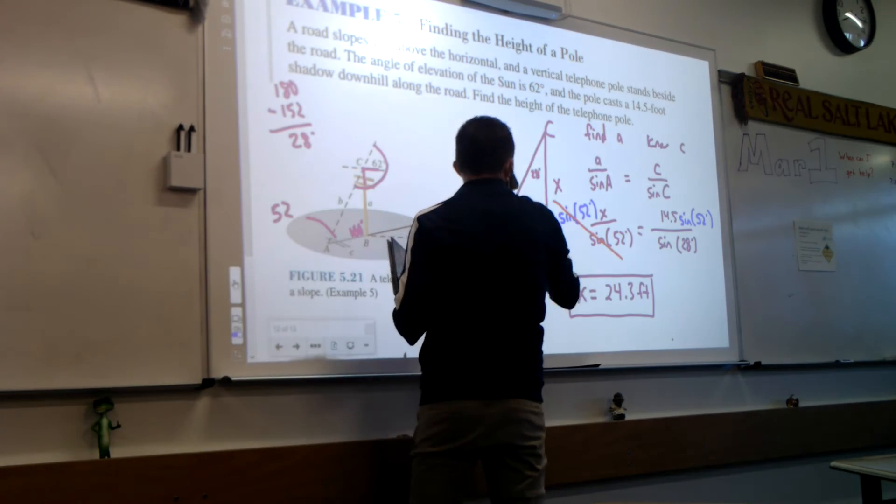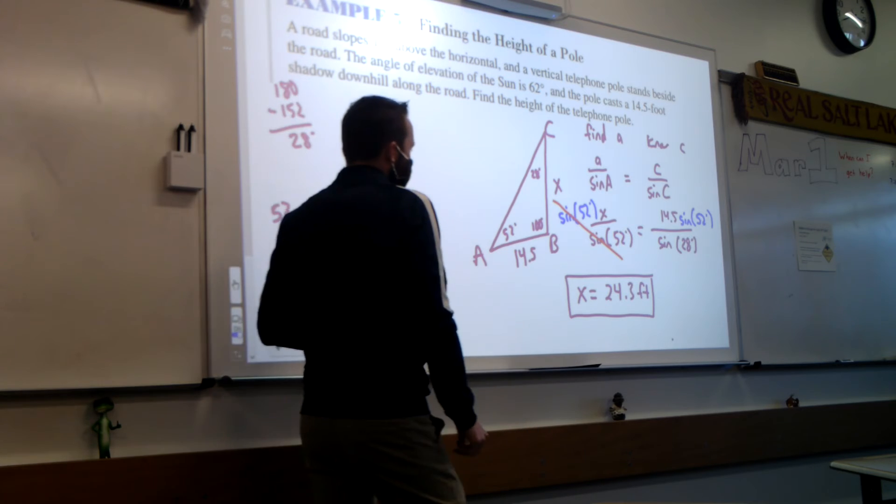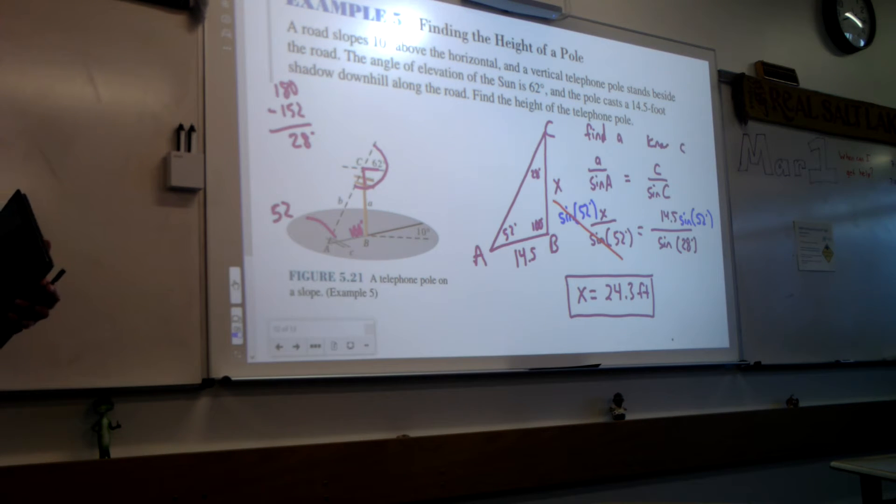Because the angle of C is the smallest angle, so that side should be smallest. Cool. Does that make sense how to do that problem?